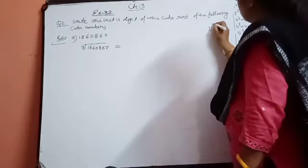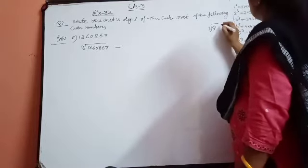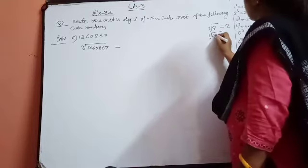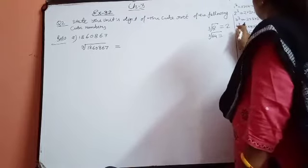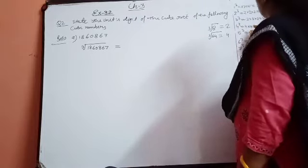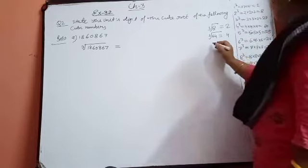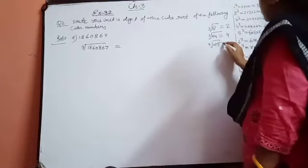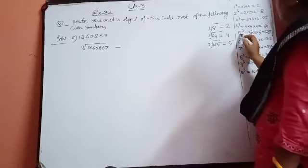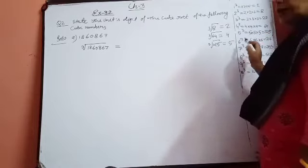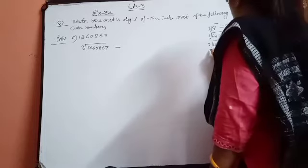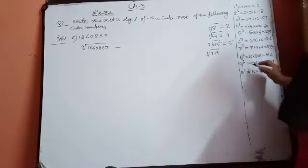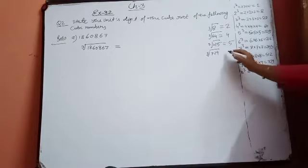Inside the bracket, when you have done the factorization of this number, which factors you got: 3 into 3 into 3 into 5 into 5 into 5 — till here. You will use the sign of the cube root. Now, out of each group of three 3s, you will bring 1 number down. And from the group of three 5s, you will bring 1 five down. So the cube root gives 3 times 5, which is 15. This will be your answer.